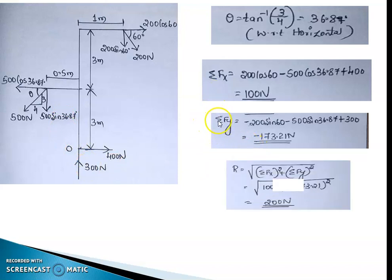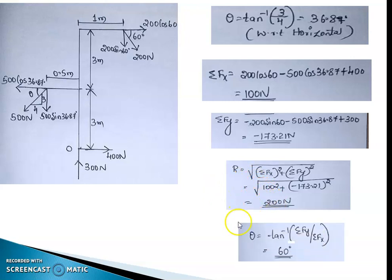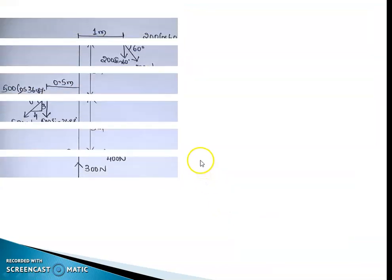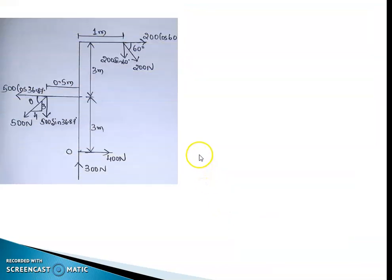Based on these two values, the resultant R equals the square root of (ΣFx² + ΣFy²), which works out to be 200 newton. From that, theta equals tan inverse of ΣFy divided by ΣFx, which works out to be 60 degrees.